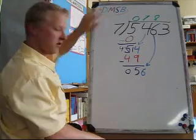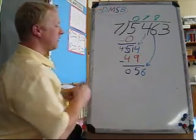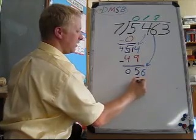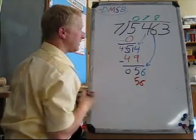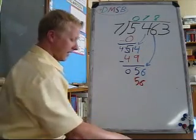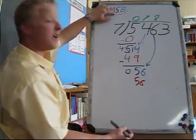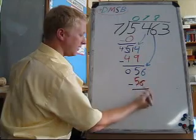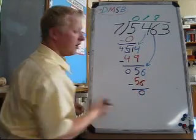M for multiply. 8 times 7 is 56. My next step, S, subtract. 56 minus 56 is 0.